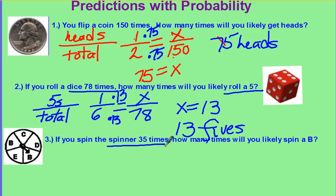And if you spin the spinner 35 times, how many times will you spin a B? We need to start with our words and what we know. B's compare to total. Start with your basic probability. There are two out of five.